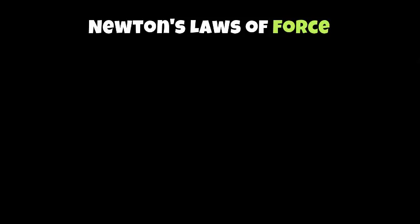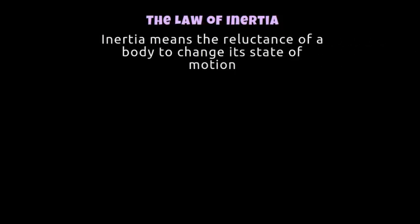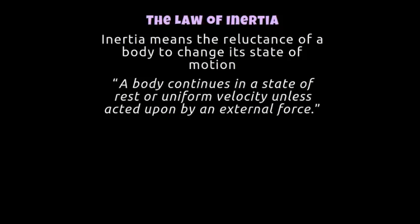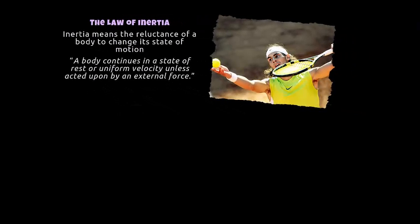Newton discovered and wrote several laws that we need to discuss the idea of force. The first law Newton came up with was the law of inertia. The word inertia means the reluctance of a body to change its state of motion — basically something being very still. He writes: a body continues in a state of rest or uniform velocity unless acted upon by an external force. That means a ball or object is very still until a force pushes it to make it move. A good example from sport is in tennis.